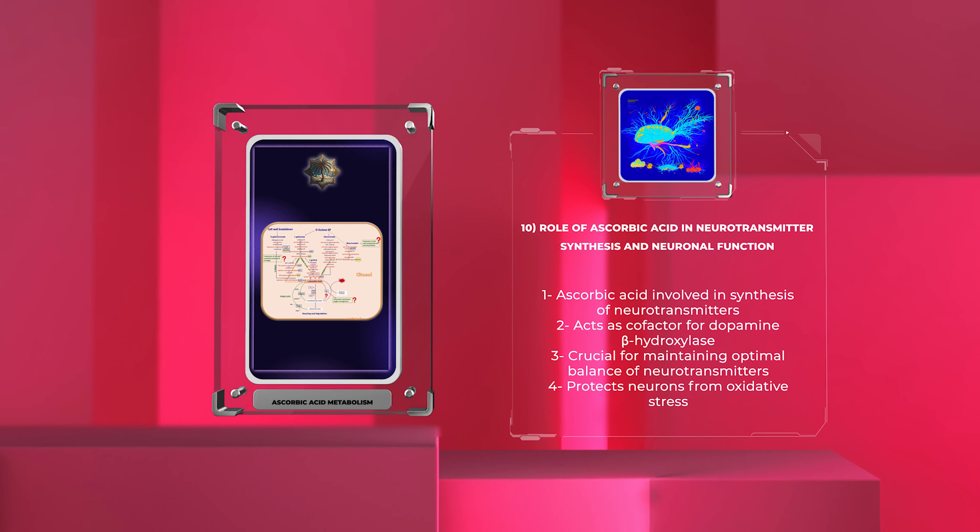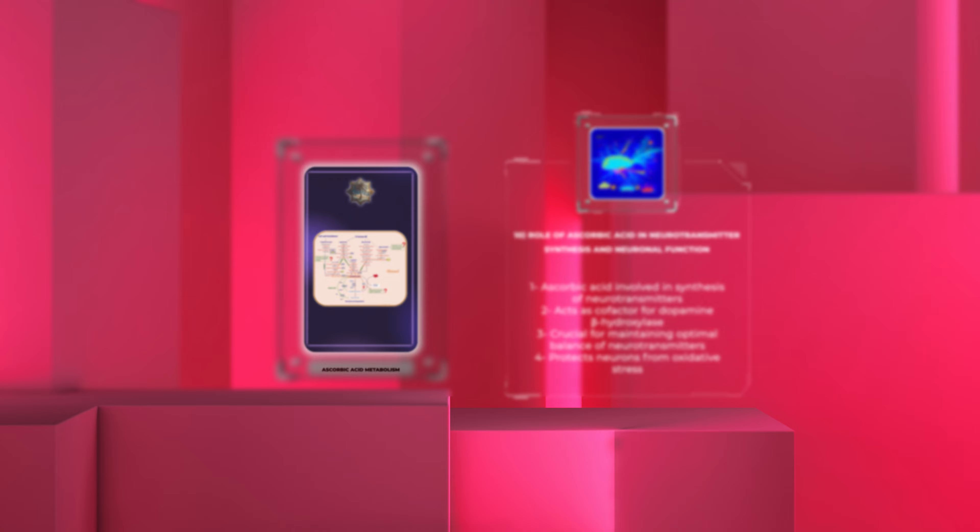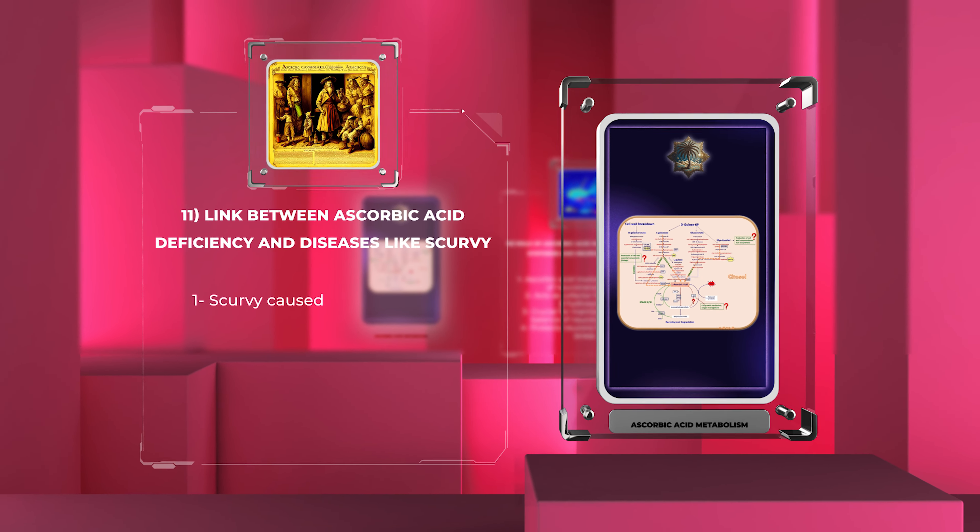Ascorbic acid's presence and regulation are essential for maintaining the optimal balance of these neurotransmitters, which can impact neurological disorders and mental health. Furthermore, ascorbic acid's antioxidant properties protect neurons from oxidative stress, ensuring their normal function and overall neuronal health.